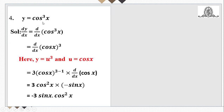Next, y = cos³x. There are two functions: the cube (raise-to-3) and the base cos x. Since it is a raise-to-n type, we differentiate the power first. Applying d/dx(x^n) = n·x^(n-1): 3·cos²x, then multiply by the derivative of cos x, which is −sin x. The minus sign comes forward, and the final answer is −3 sin x · cos²x.